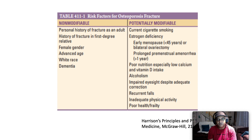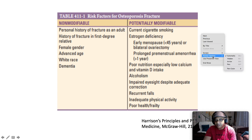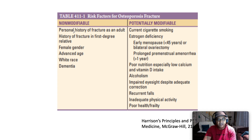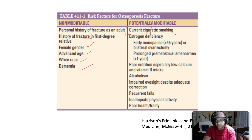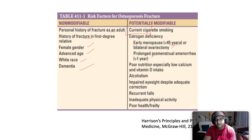Non-modifiable risk factors for osteoporotic fracture include personal history of fracture as an adult, history of fracture in a first-degree relative, female gender, advancing age, white race, and dementia. Potentially modifiable risk factors include current cigarette smoking, early menopause before age 45 or bilateral oophorectomy, prolonged premenopausal amenorrhea over one year, and poor nutrition especially low calcium and vitamin D.